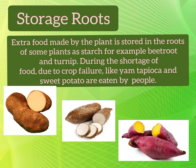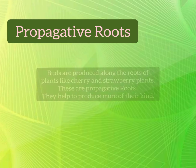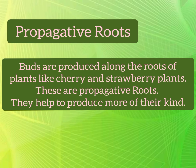Next is propagative roots. Buds are produced along the roots of plants like cherry and strawberry plants. These are propagative roots and they help to produce more of their kind.